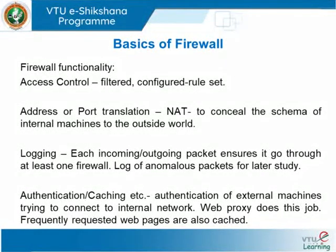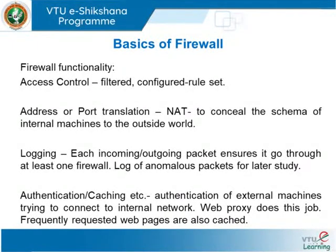The next functionality is address or port translation — NAT, or Network Address Translation, which solves the problem of IP address shortage by providing private addresses used by system administrators on internal networks. These addresses are globally invalid on the internet. Through NAT, you can conceal the IP addresses of machines inside your organization from being viewed from outside. That's another functionality of a firewall.